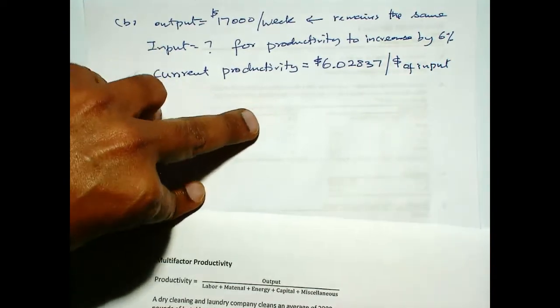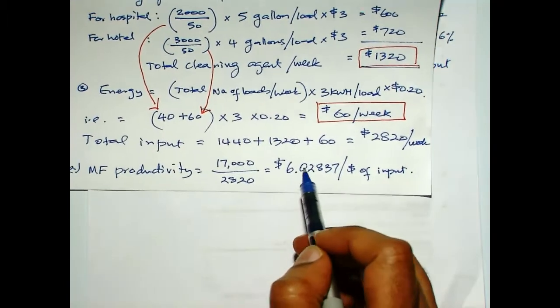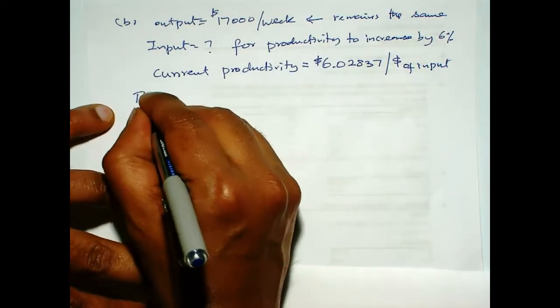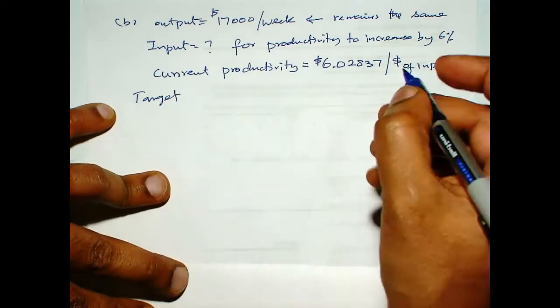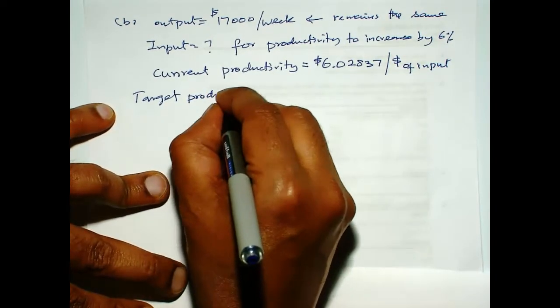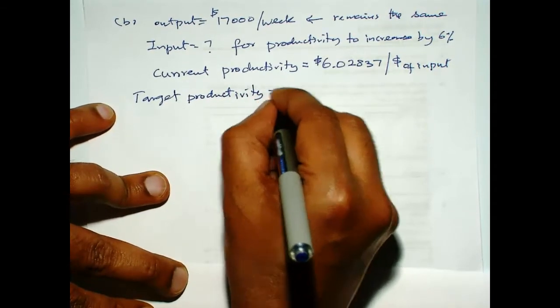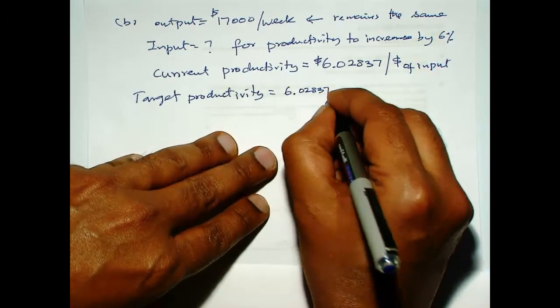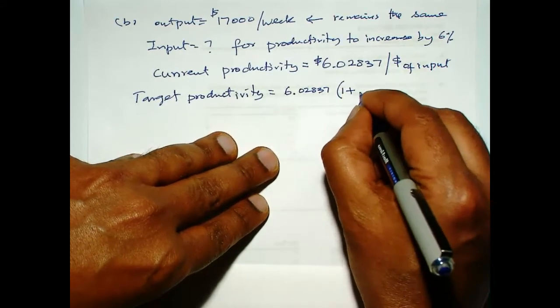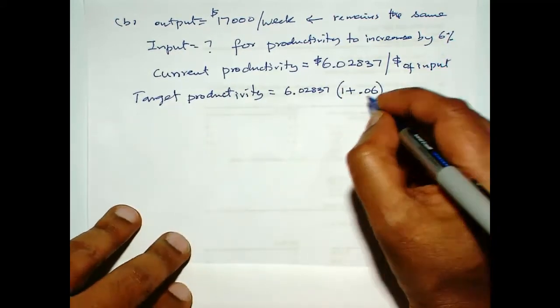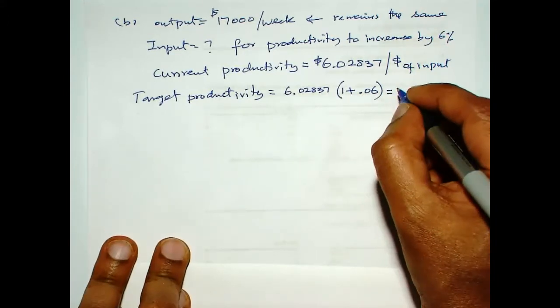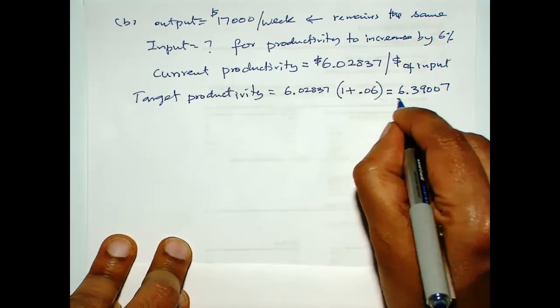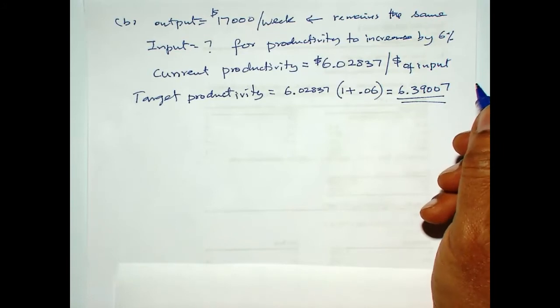Now, the target productivity, we want to increase productivity by 6 percent. So, our target productivity is our current productivity multiplied by 1 plus 0.06 for 6 percent. So, this gives us 6.39007. So, that is our target productivity, alright?